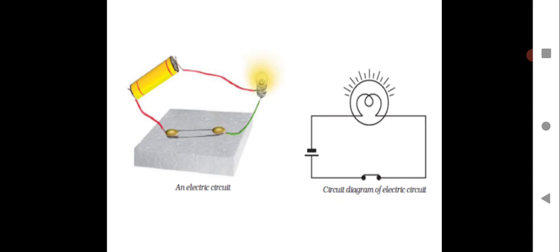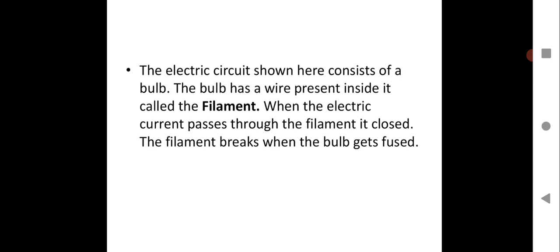First of all, this was the circuit diagram of the electric circuit which was told to you to be drawn in the notebook. I hope you have drawn this. We can continue with the chapter and the concepts. Let us learn about the electric circuit and how the bulb works. We will see some electrical components in detail and learn about the effects of electric current. There are two effects we are going to learn in this chapter.